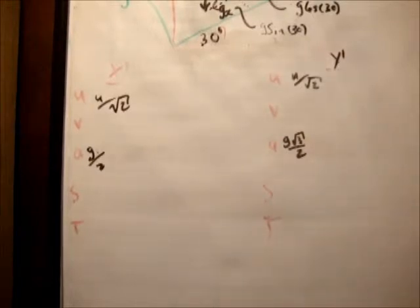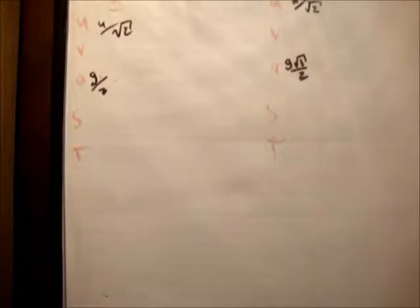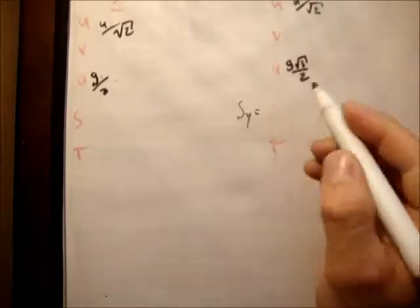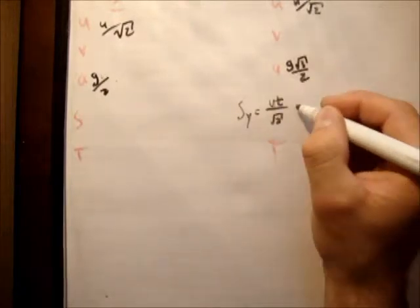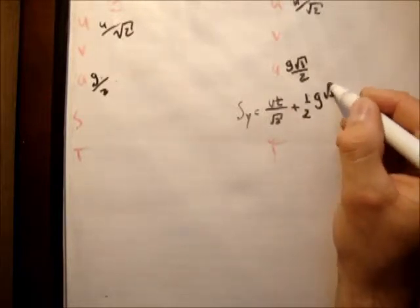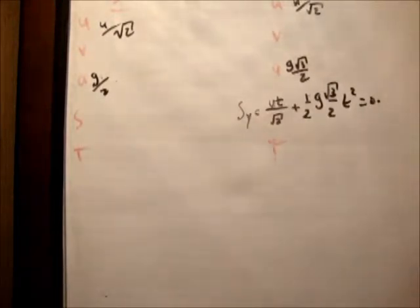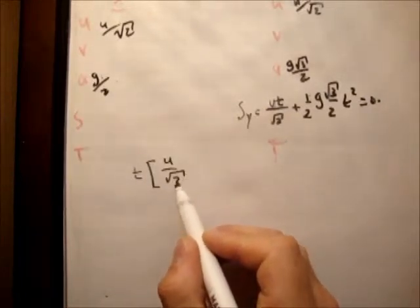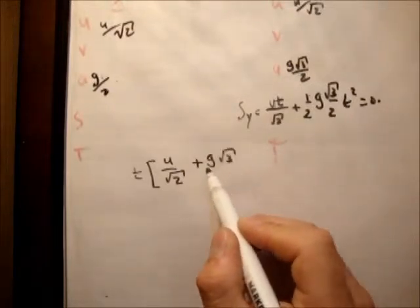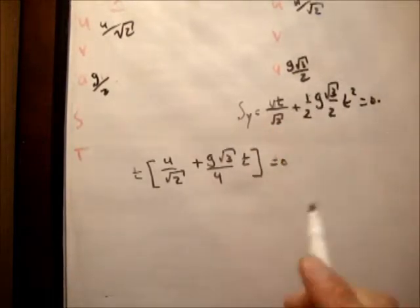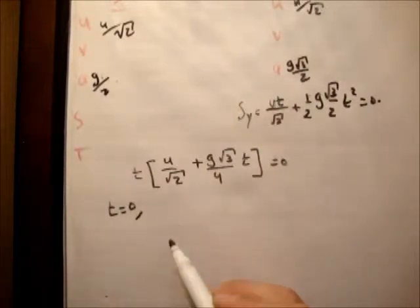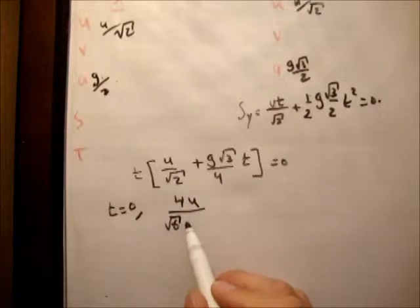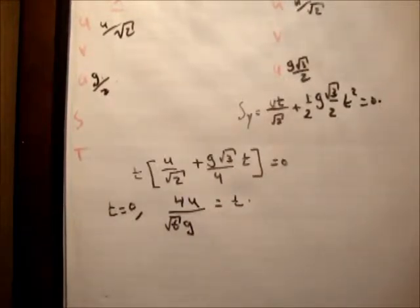The maximum range corresponds to when the height above the incline is zero, i.e., s-sub-y equals 0. Using s = ut + half a t squared, we get: ut over root 2 plus g root 3 over 4 times t squared equals 0. Factoring out t gives: t times (u over root 2 plus g root 3 over 4 times t) equals 0. So t equals 0 or t equals minus 4u over root 6 times g.